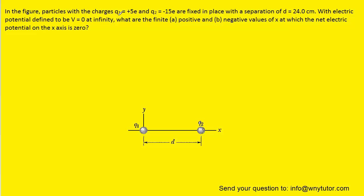What we can do first is go ahead and label q1 with its charge of plus 5e and then q2 with its charge of negative 15e.